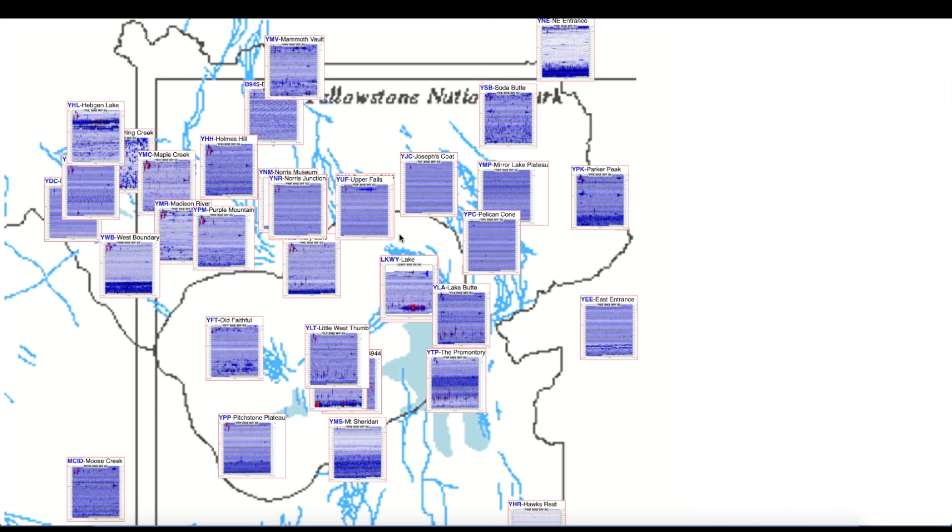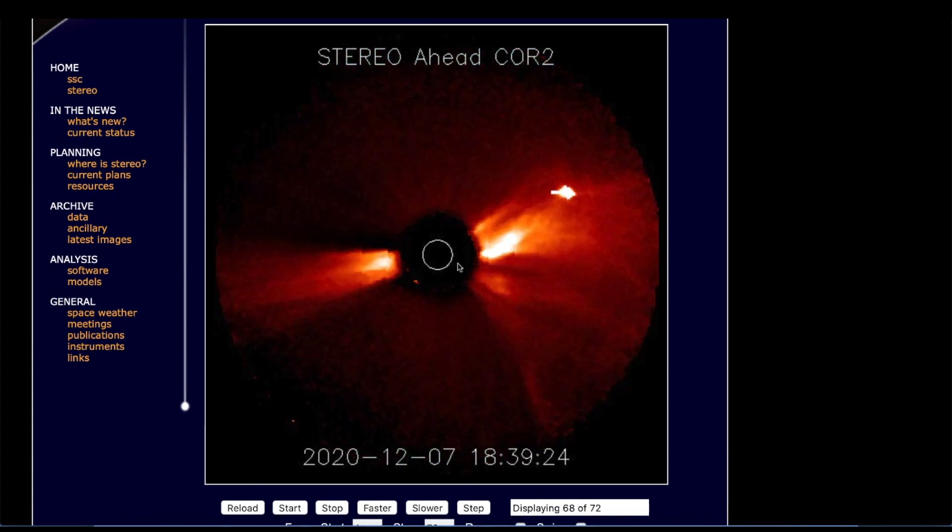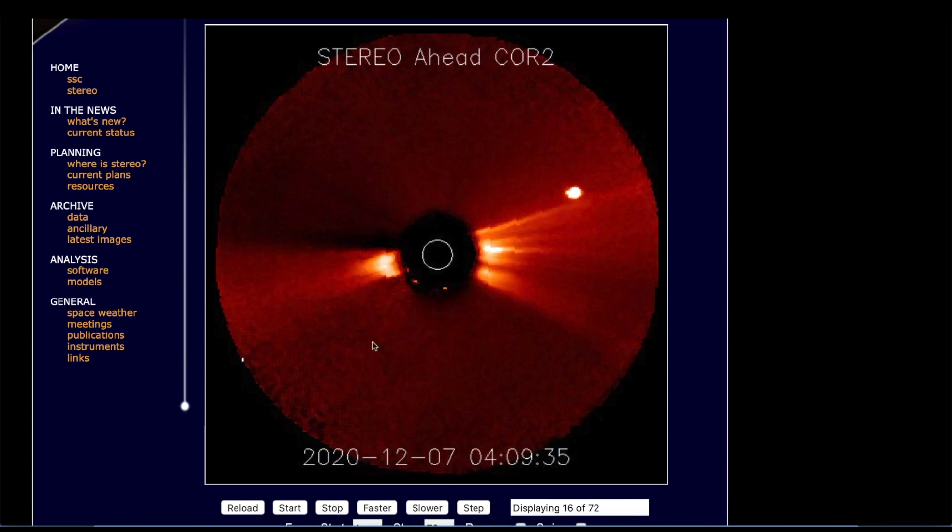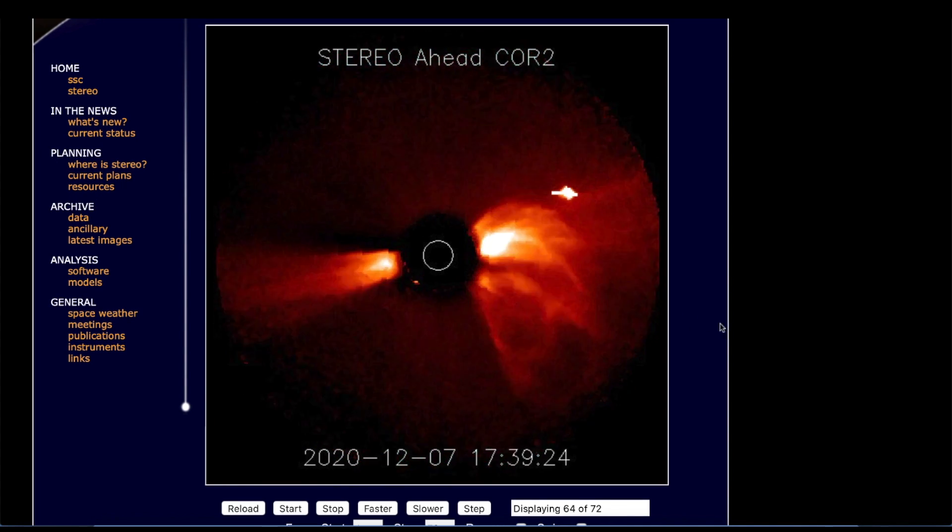Now back to the STEREO Ahead spacecraft. Again, this is off to the left-hand side of Earth. If we're viewing Earth looking from the spacecraft, the Earth is right over here.